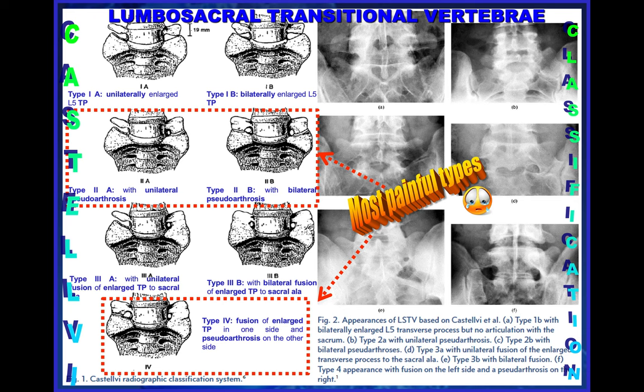It's very important to use the Castelvi classification of lumbosacral transitional vertebrae. Type 1 is when there is only an enlarged transverse process on one or both sides. Type 2 has a true pseudo-joint, unilaterally or bilaterally, which is a very painful subtype. Type 3 has a fusion of the enlarged transverse process with the sacrum instead of a pseudo-joint. Type 4 is a combination: one side has a pseudo-joint and the other has a fused enlarged transverse process with the sacrum.